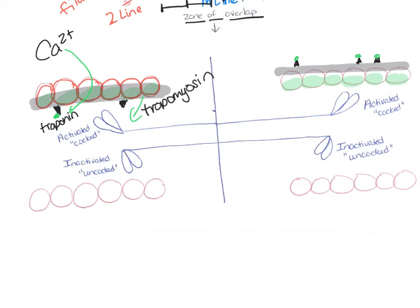As long as calcium is present, the active site will be exposed. If calcium left, then tropomyosin would roll back over that active site, and then we wouldn't be able to get shortening of that sarcomere — we wouldn't be able to get a contraction.